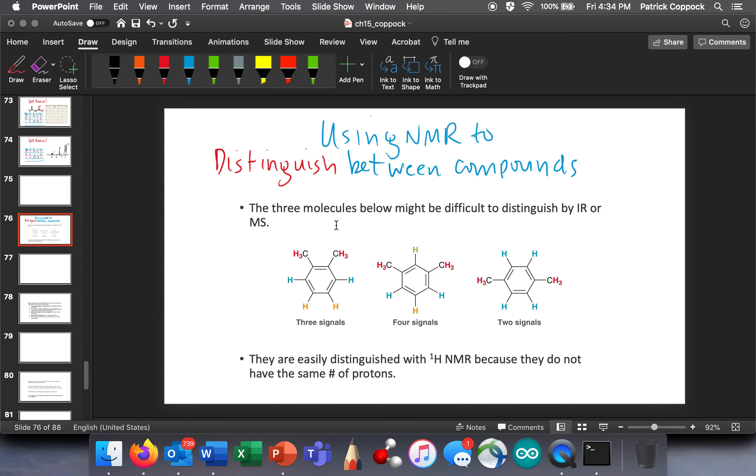Okay, so now we're going to do exactly what you would think we would do after we've built up our repertoire for proton NMR. We are going to distinguish between compounds. So let's consider these three compounds below.